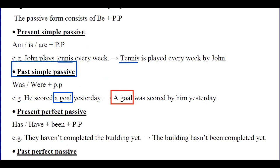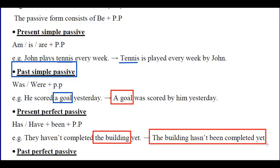Present perfect passive: 'They haven't completed the building yet.' The object is 'the building,' so we start with it: 'The building hasn't been completed yet.'